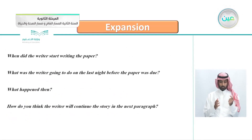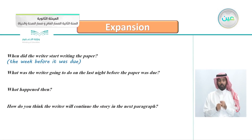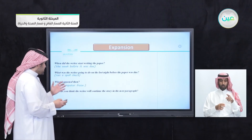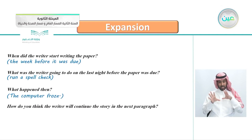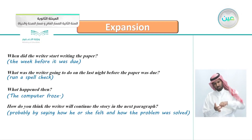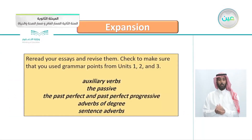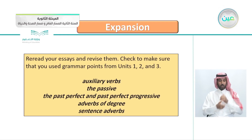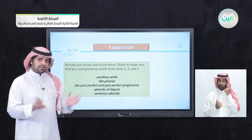When did the writer start writing the paper? The week before it was due. What was the writer doing on the last night? Running a spell check. What happened then? The computer screen froze. How do you think the writer will continue the story in the next paragraph? Probably by saying how he or she felt and how the problem was solved. When you finish your essay, reread and revise it. Check that you used the grammar points from units one, two, and three: auxiliary verbs, the passive, the past perfect, the past perfect progressive, adverbs of degree, and sentence adverbs.